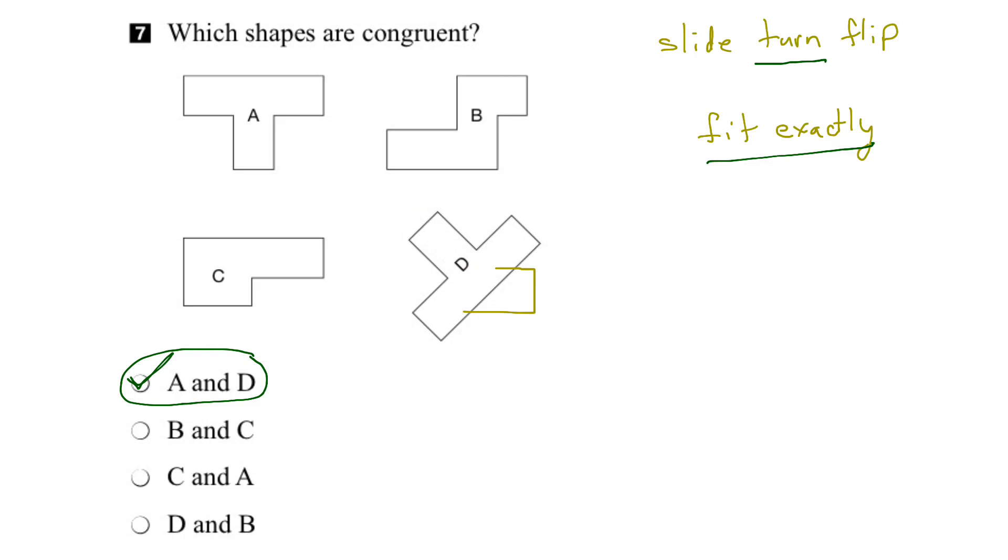Alright, let's just try shape C. So again, I'm going to draw an outline of shape C. And we'll start by sliding. So if I slide it, nope, it doesn't fit exactly with A or B or D.